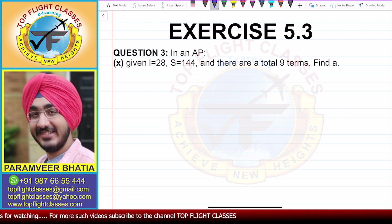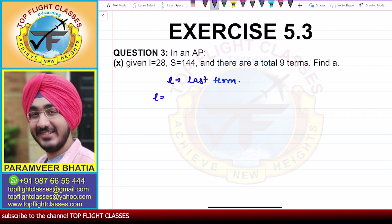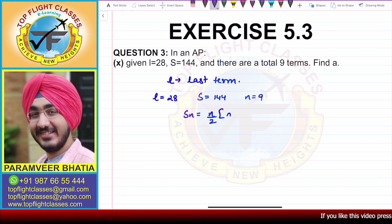What is L? In an AP, L represents the last term. So in this case, L is 28, S is 144, N is 9. If we write the sum of N terms, that is given by N by 2 times A plus L.